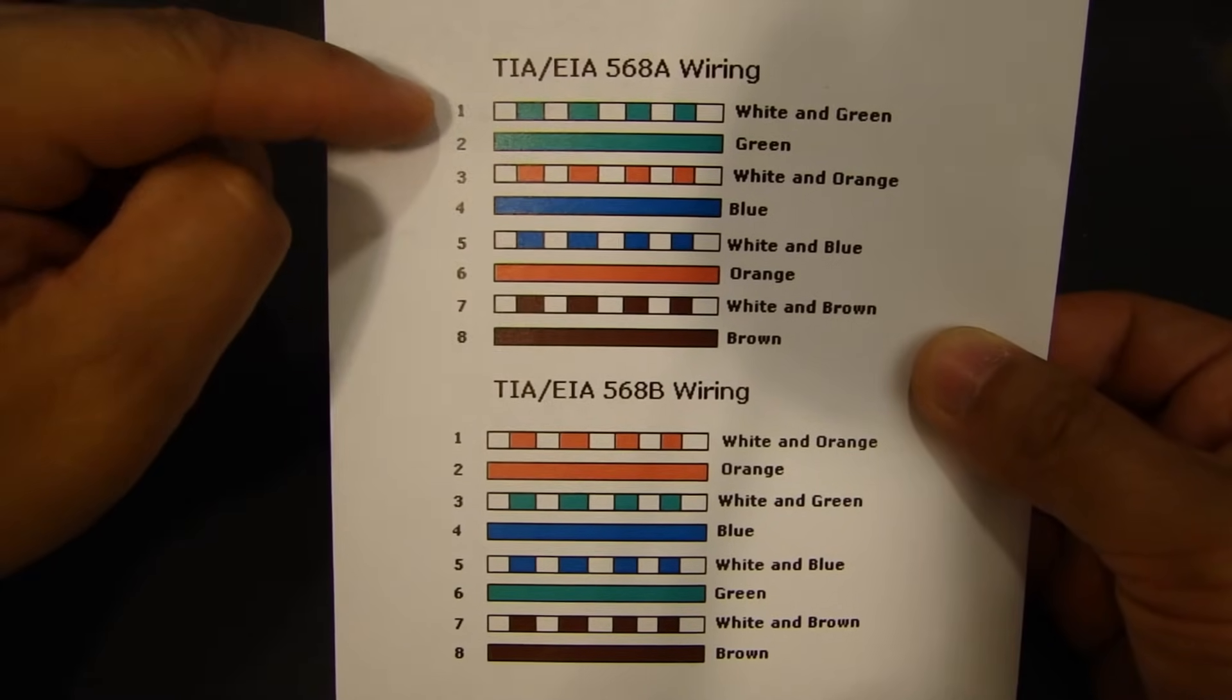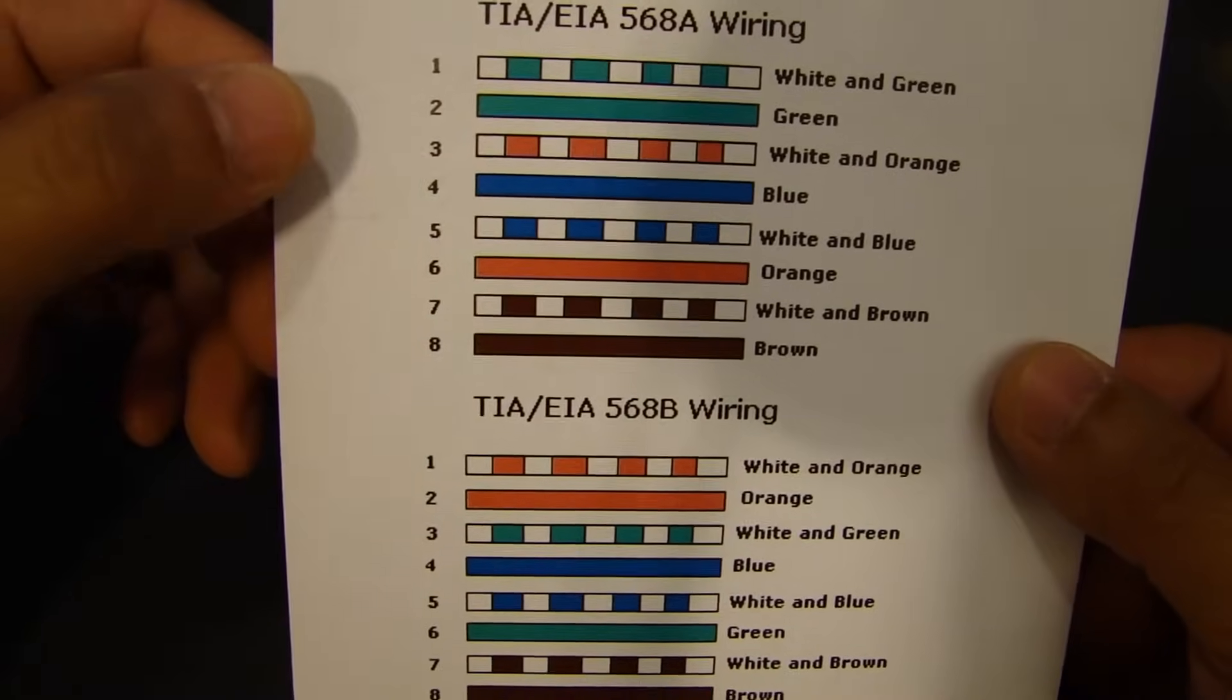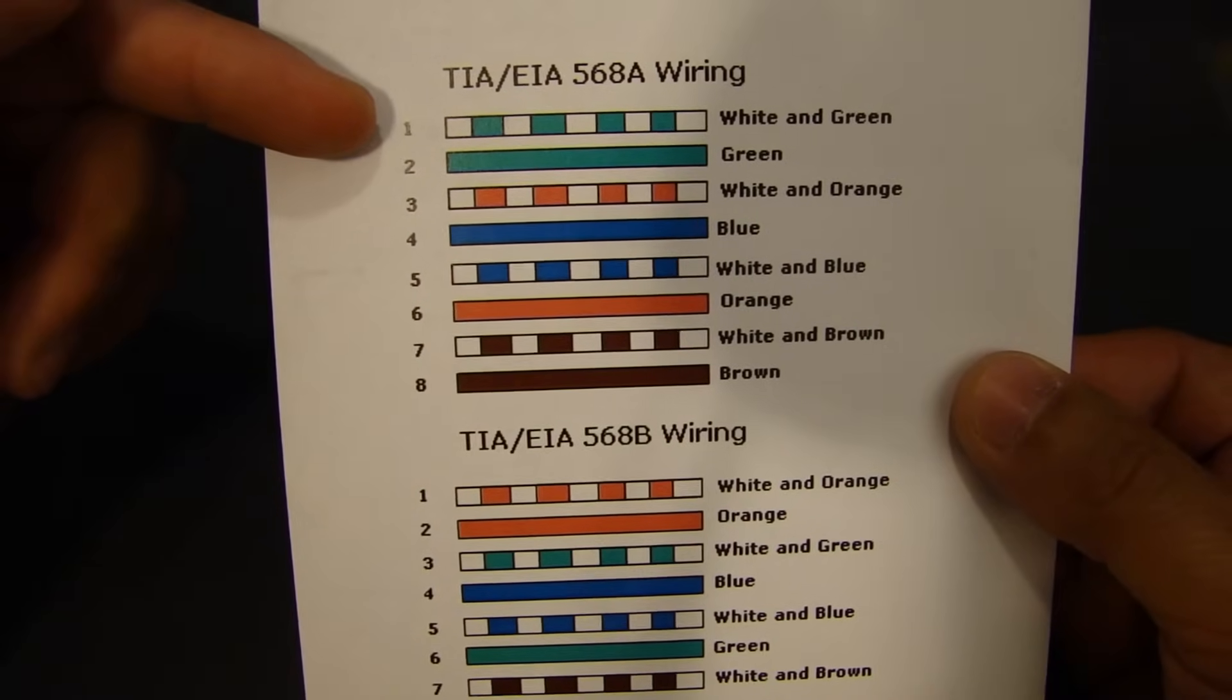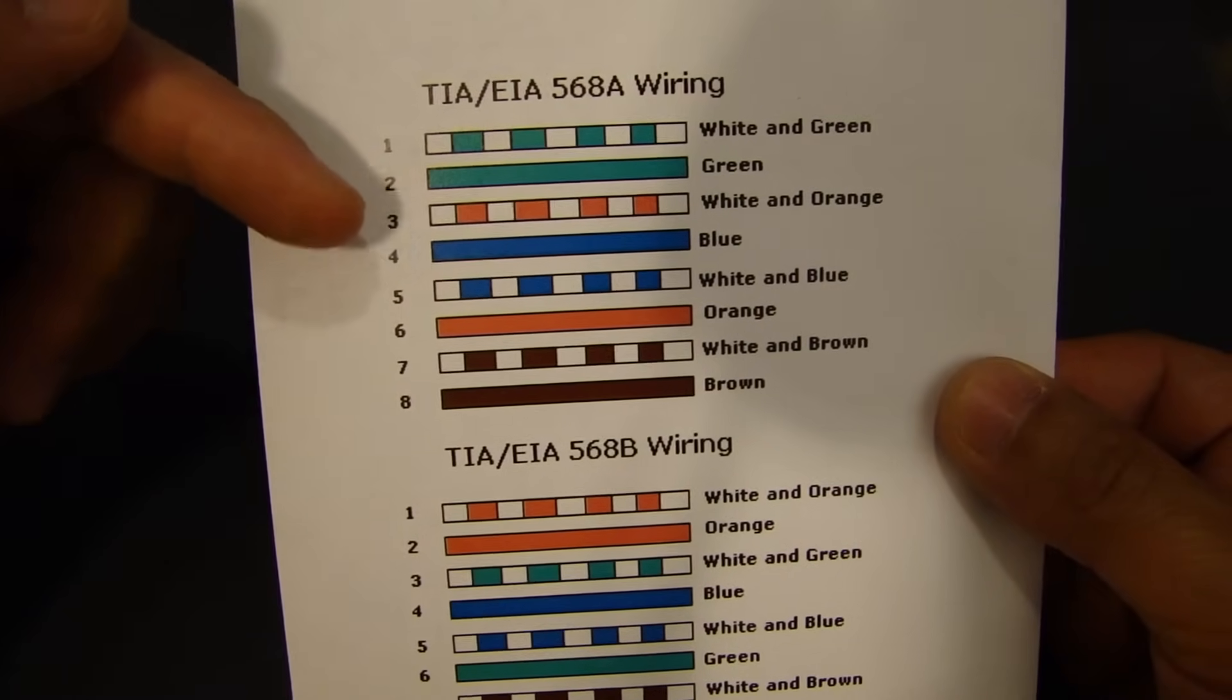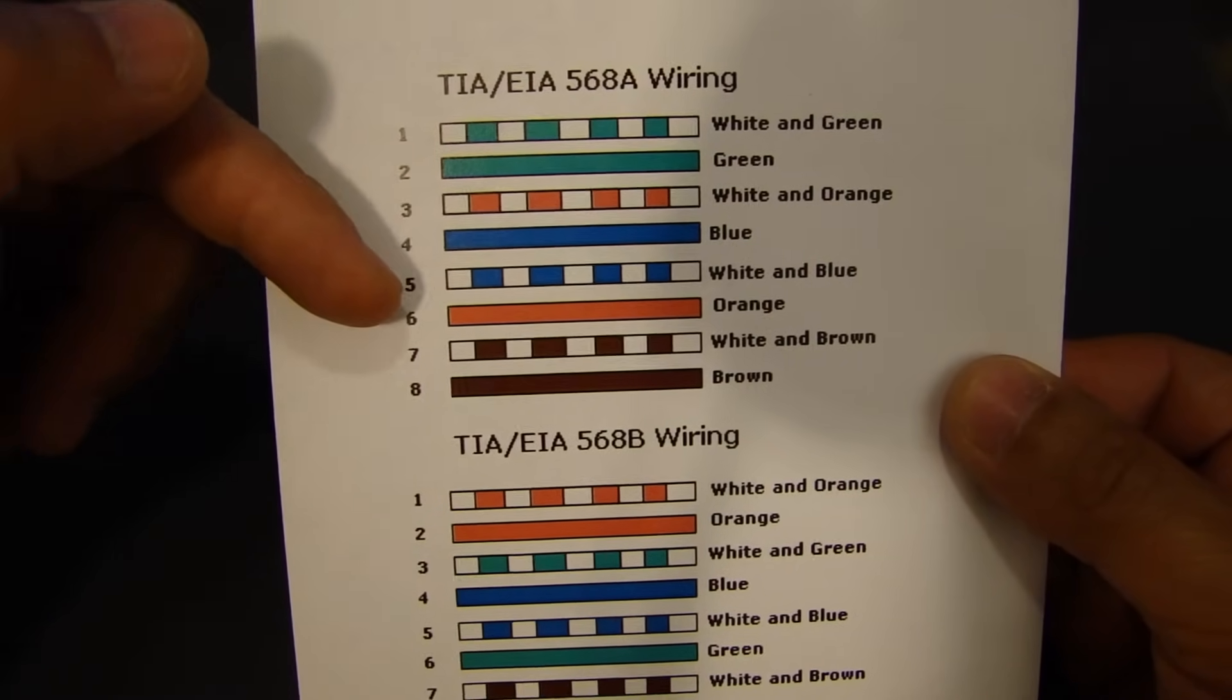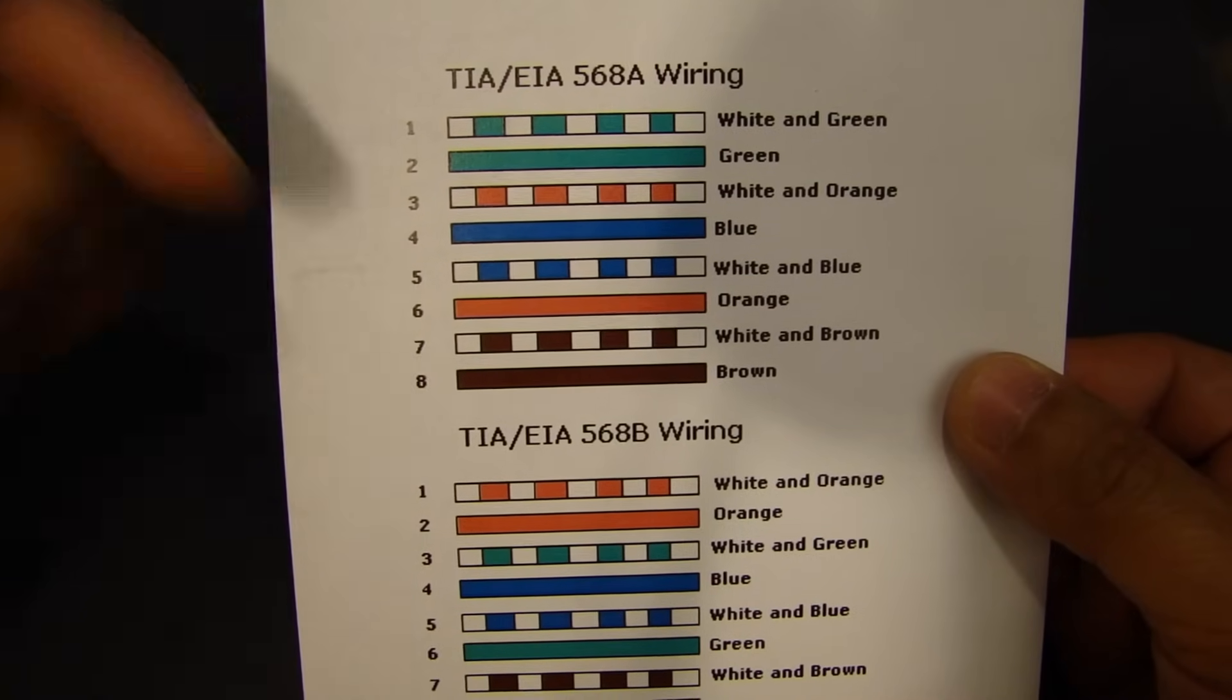And let's go through this. Basically, you have starting with pin one, pin one to eight. So starting with pin one, you have a white-green, green, white-orange, blue, white-blue, orange, white-brown, brown.